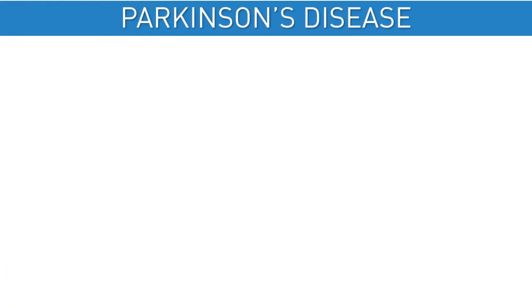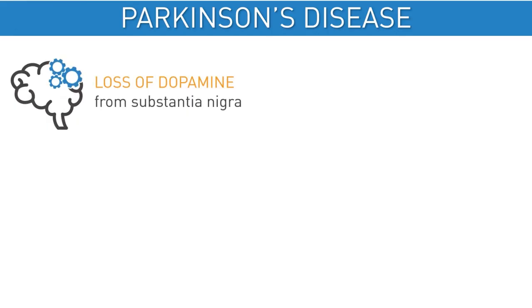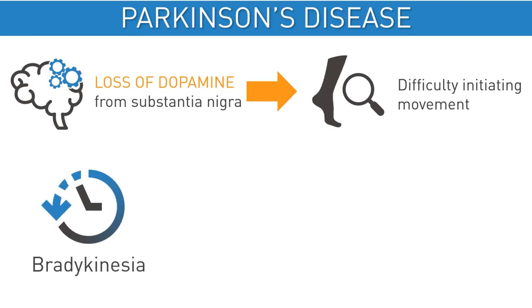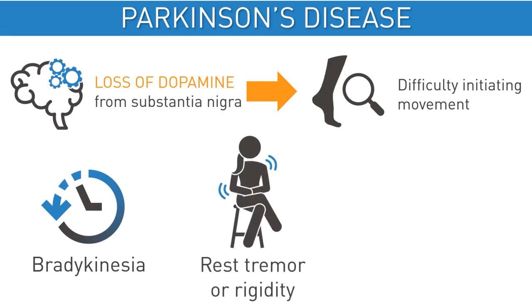Parkinson's disease is a neurologic condition that results with the loss of dopaminergic neurons in the substantia nigra, which leads to difficulty with initiating and performing movements. Parkinson's disease is defined by the presence of bradykinesia — a decrement in speed and amplitude of repetitive movements — and a rest tremor or rigidity with cogwheeling from superimposed tremor.